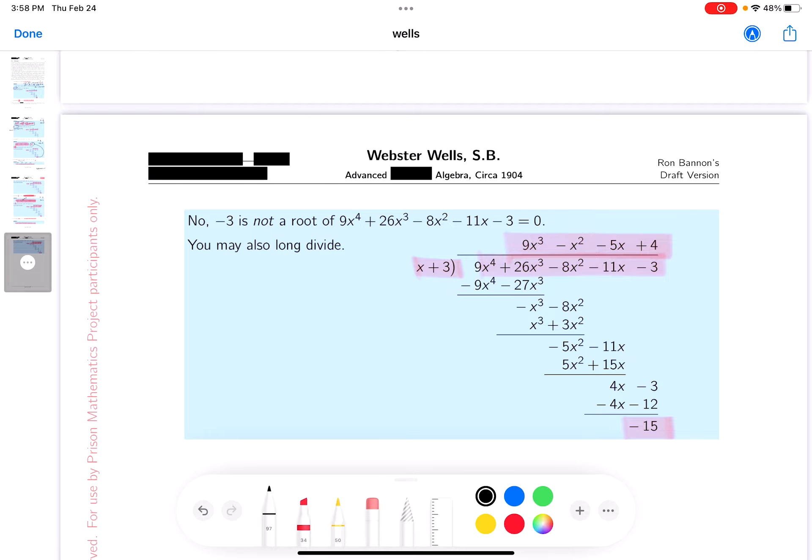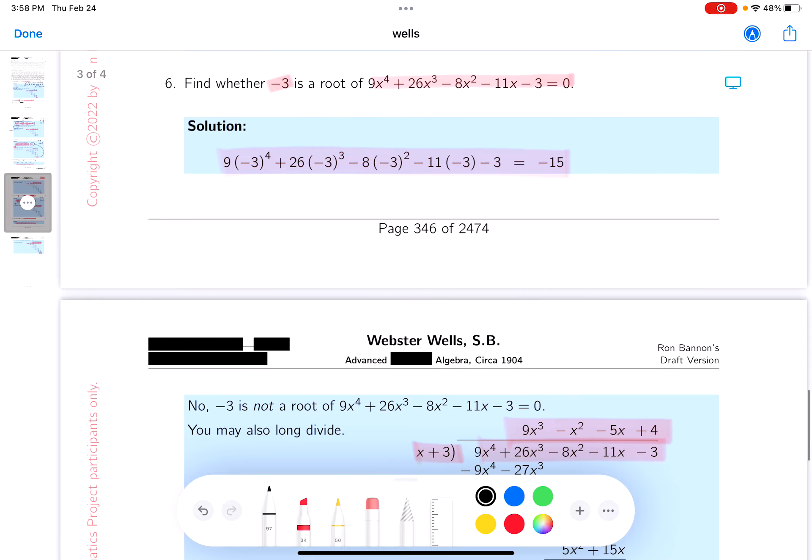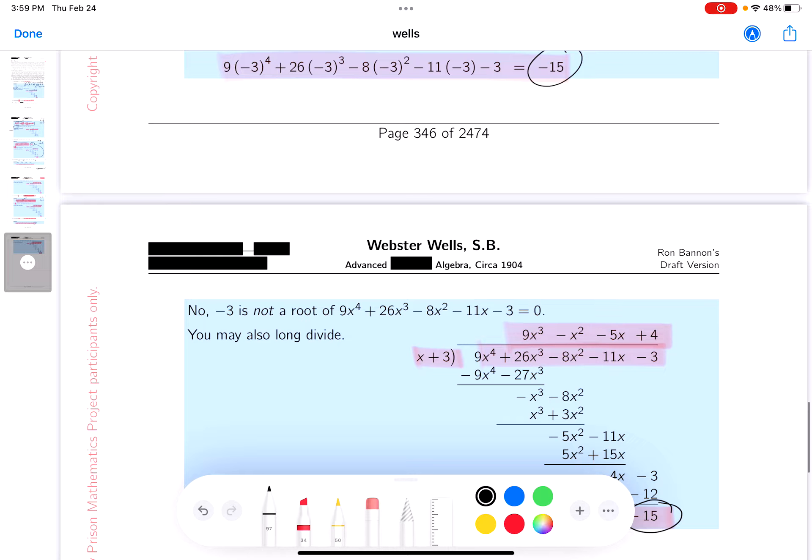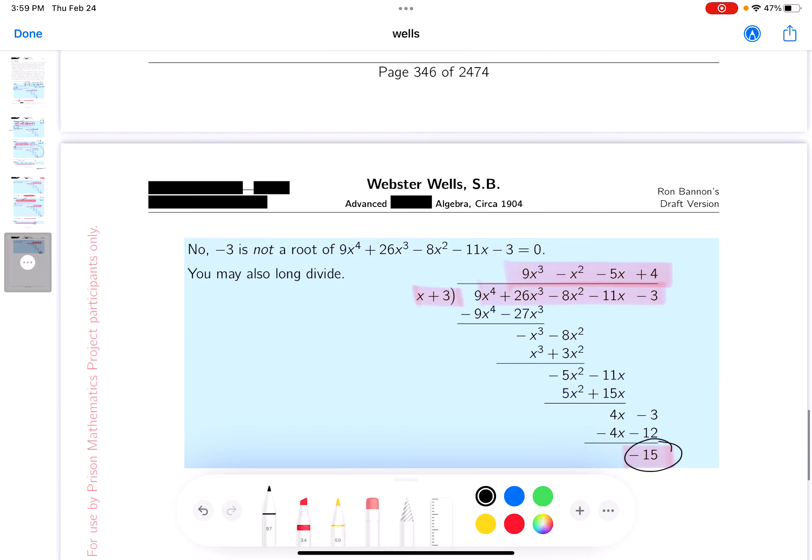I want to point out, this -15 is the same thing as up over here. That's an important fact that's often what we use to determine if we get a root. If we get a zero, the remainder would be zero.